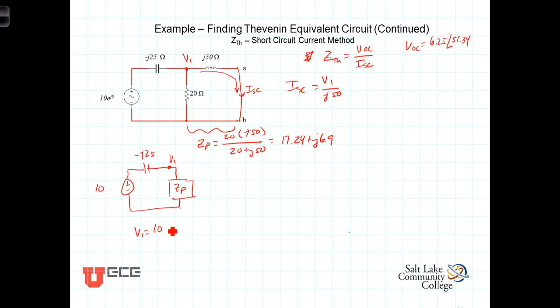V1 then is equal to 10 times Zp, which is 17.24 plus J6.9, divided by the sum of those two, 17.24 plus J6.9 minus J25. And V1, it turns out, is then equal to 7.43 angle 68.2.